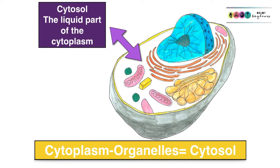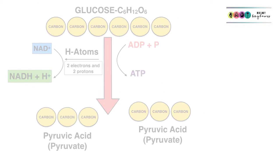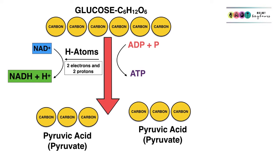So let's move on to glycolysis. It takes place in the cytosol, which is the liquid part of the cytoplasm. In glycolysis we start off with glucose, which is made up of six carbons and has the formula C6H12O6.